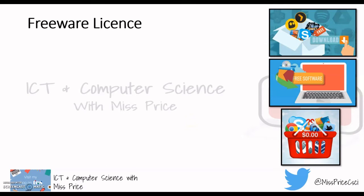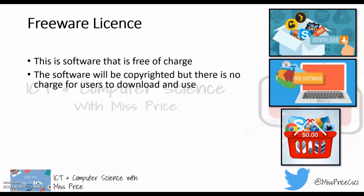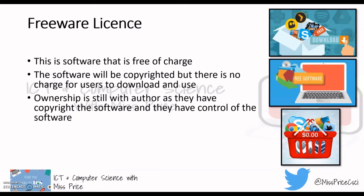Freeware is software that is free — it hasn't cost you anything. Examples include Twitter, Skype, and Google Chrome. You can download and use this software at no charge, but the software is copyrighted. You don't own it — for example, Google Chrome belongs to Google.